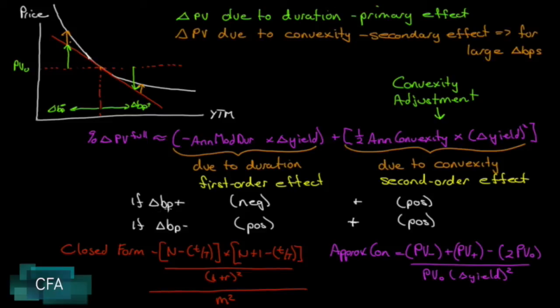So if the yield increases, if we have a change in basis points that's positive, we will get a negative effect on the first order effect. In other words, the full price of the bond will drop with a rise in rates, and the convexity adjustment will correct it back up to the curve.